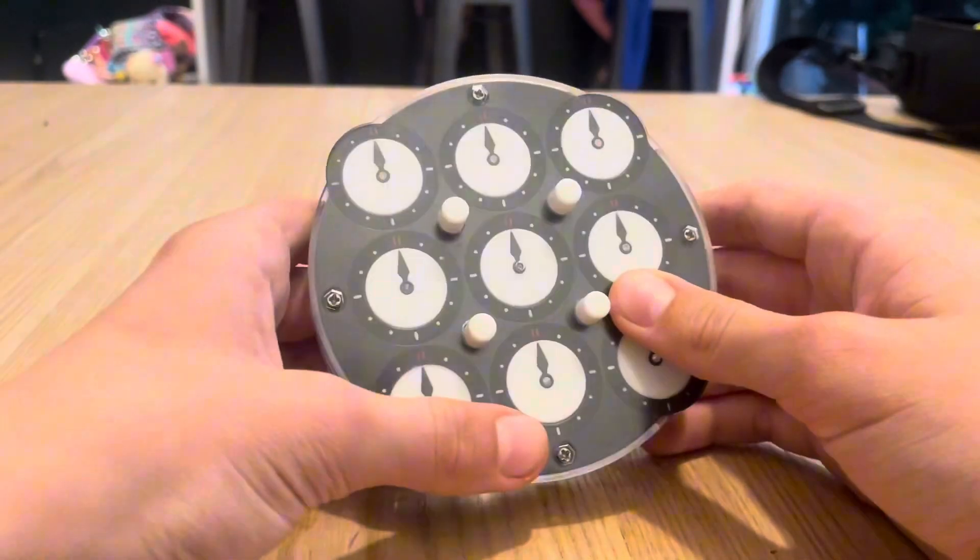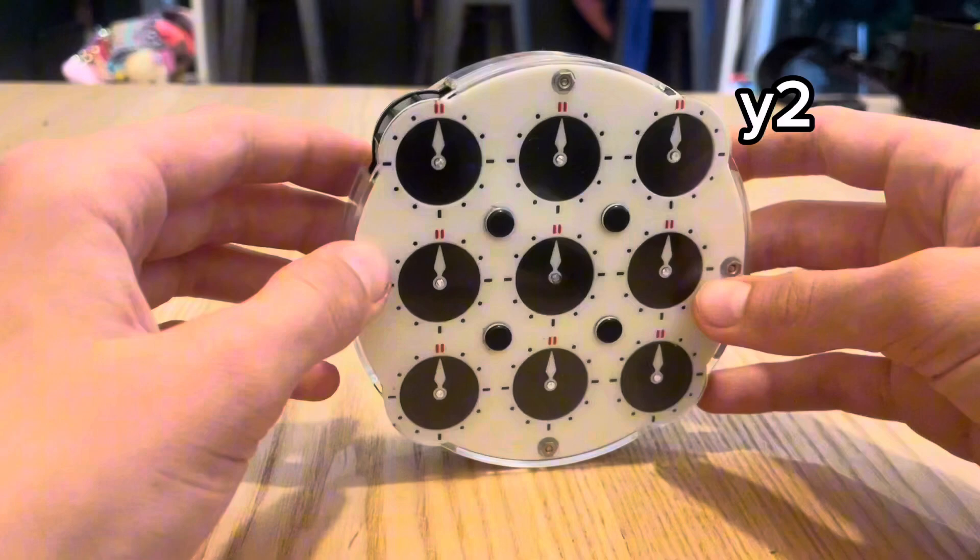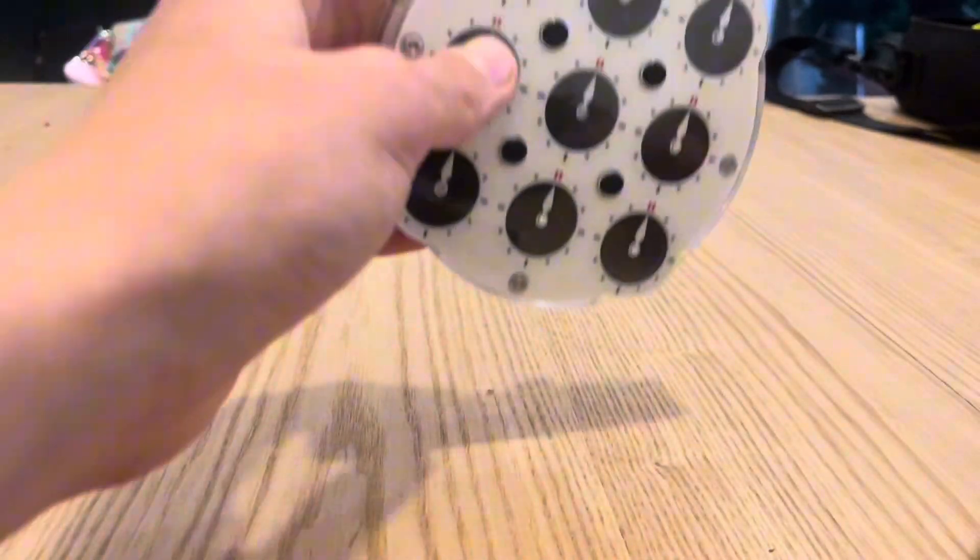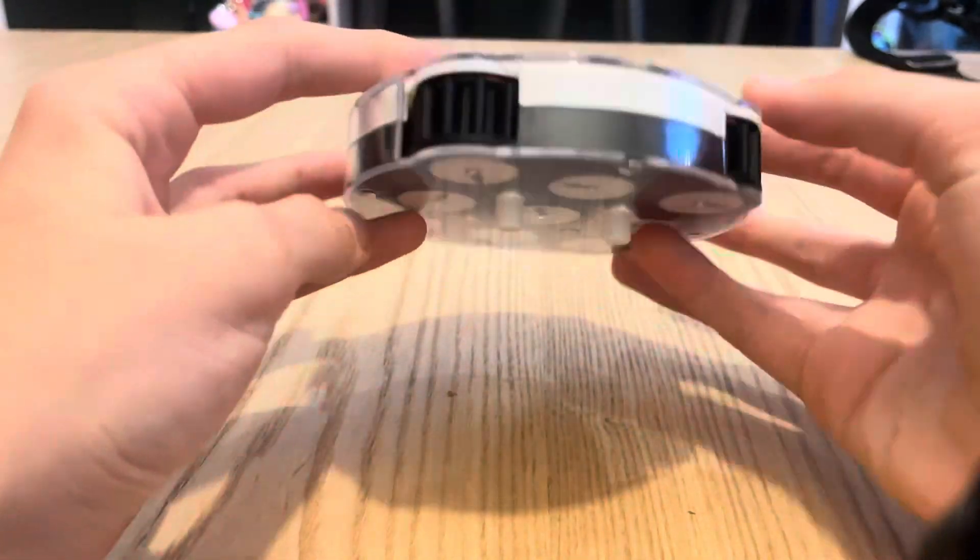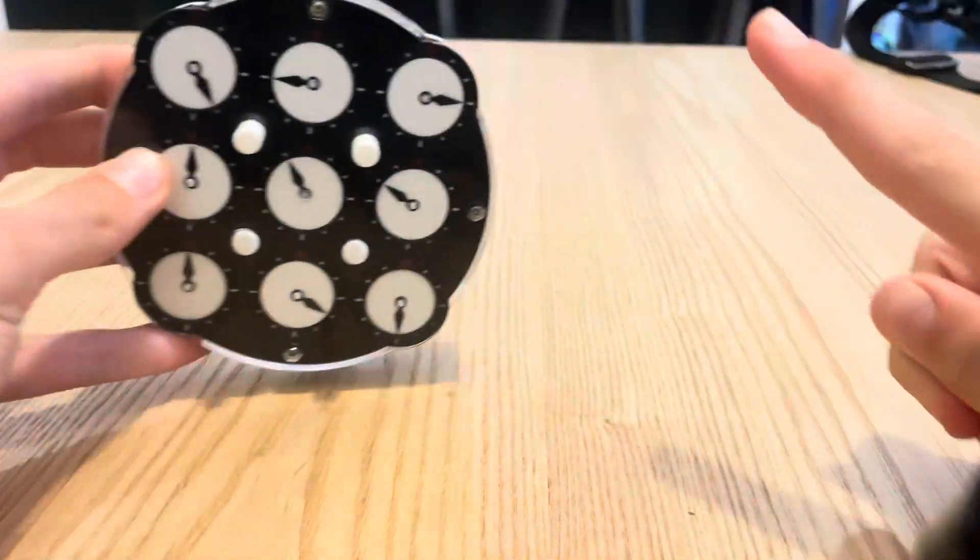Also, all scrambles will have Y2, and that just means to flip the clock around like so and continue scrambling. Now test your notation skills, as I'll stick this scramble up on the screen up here.